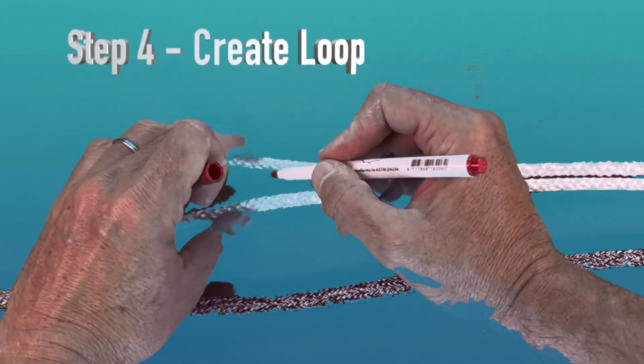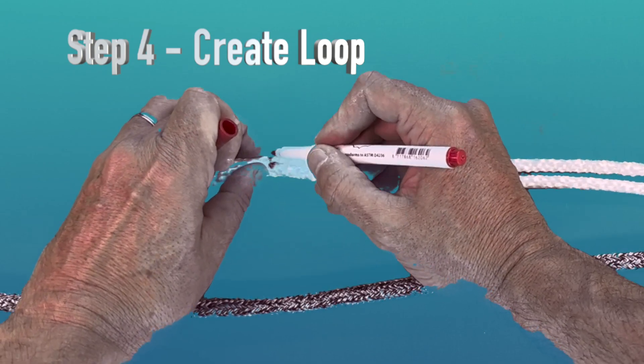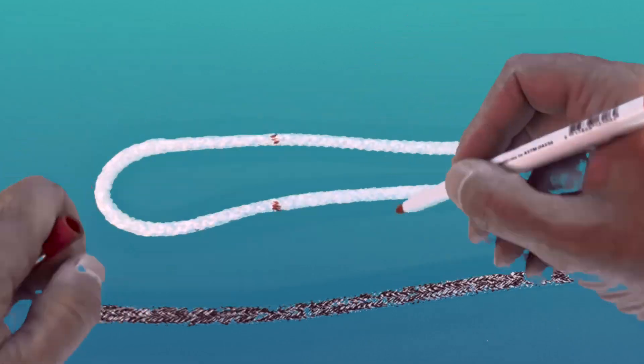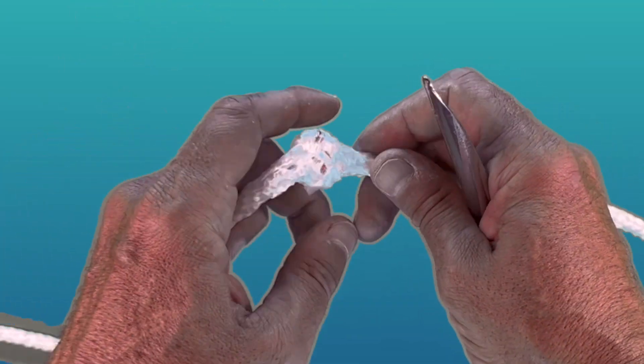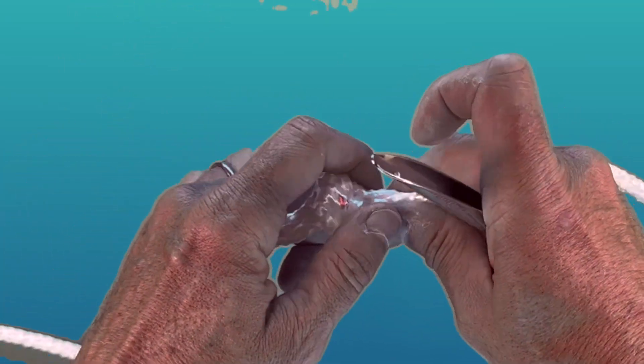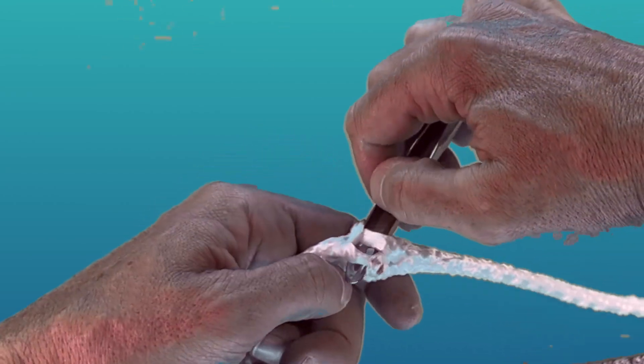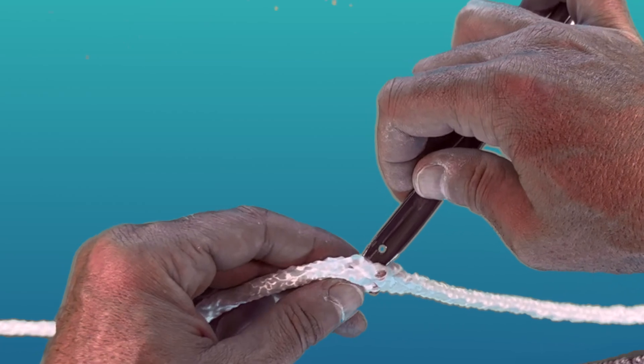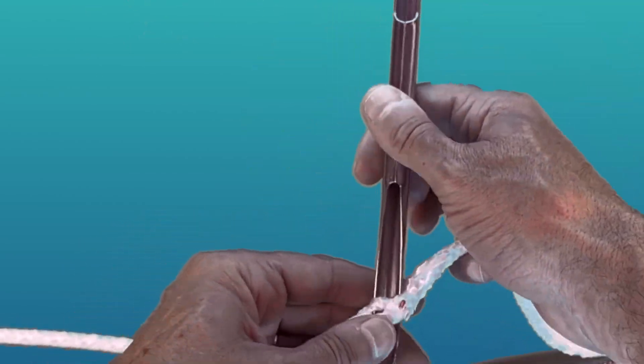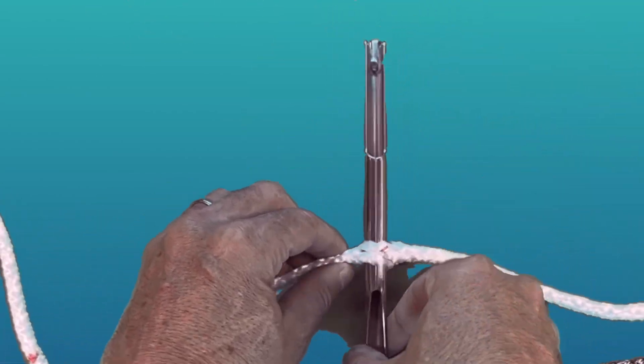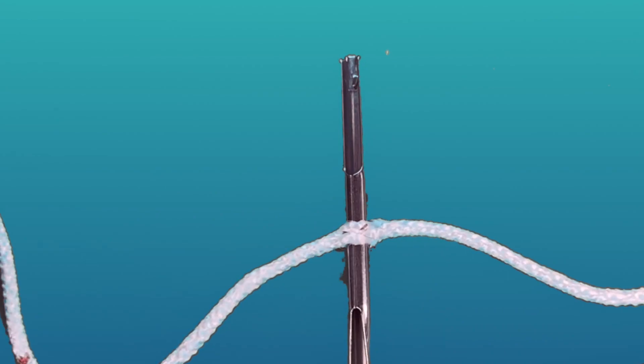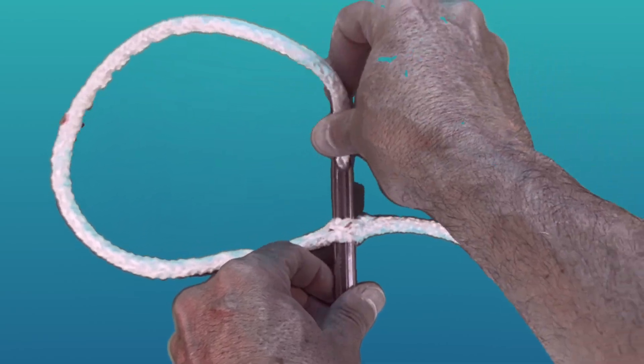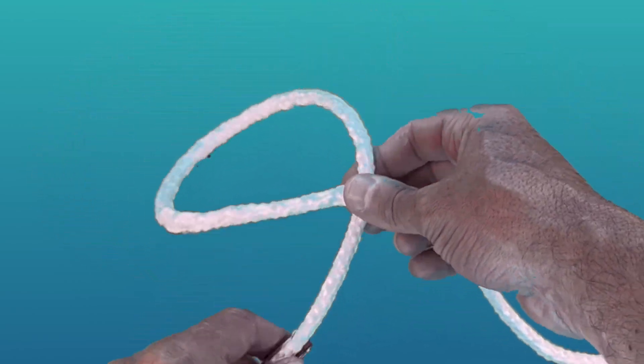For step number four, you want to take your Sharpie pen and mark the size of your eye with a line on each side of the core. Then loosen up the core, starting with the mark that's closer to the outer part of the rope, putting through a big fid that allows you to take the working end and slide it into the fid and pop it through to create a nice loop.